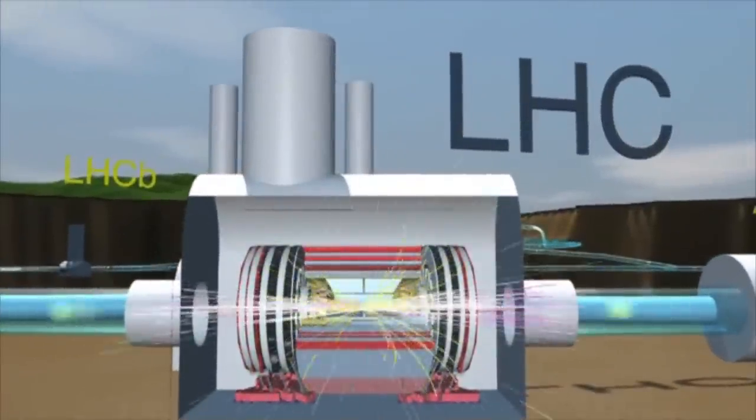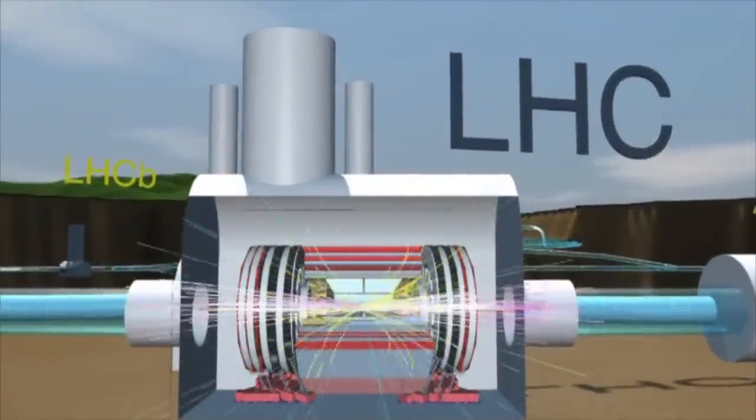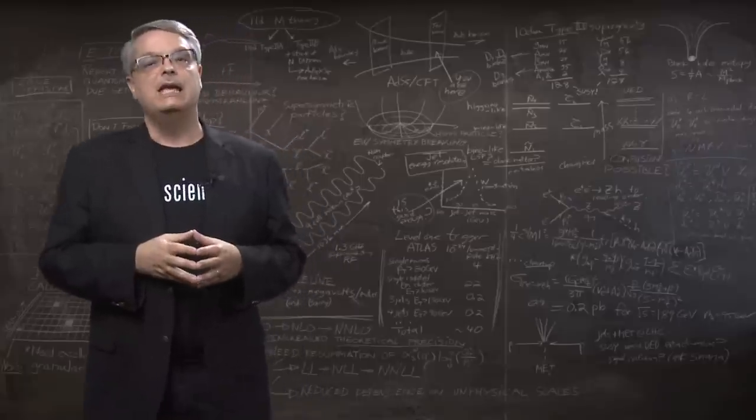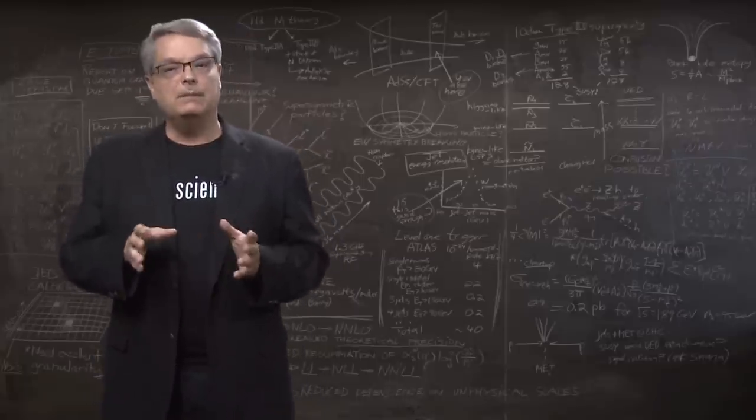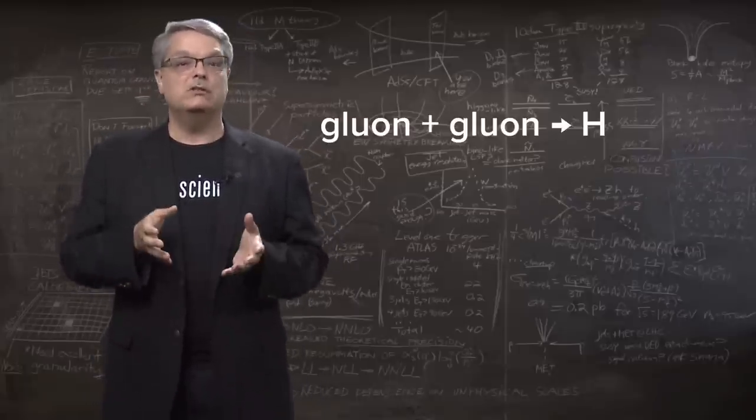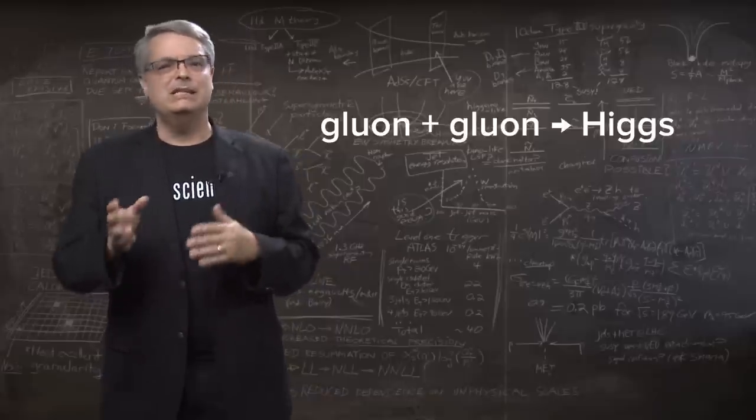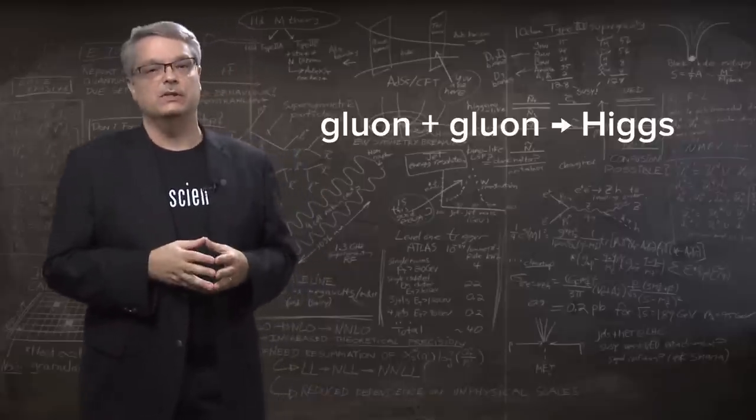Well, it's because the LHC was built for many reasons, one of which was to find Higgs bosons. Higgs bosons are created by a complicated merging of gluons, and ordinary protons have tons of gluons. So there was no need to go to the effort of making antiprotons.